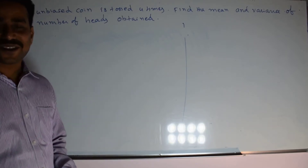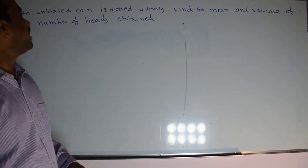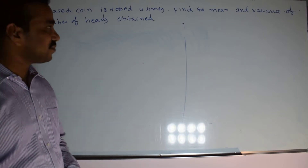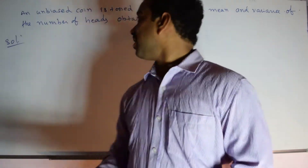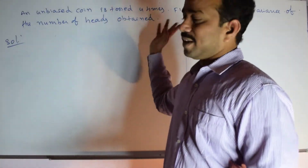Hi, let us see how to solve this question. What is the difficult question? An unbiased coin is tossed 4 times. Find the mean and variance of the number of heads obtained.